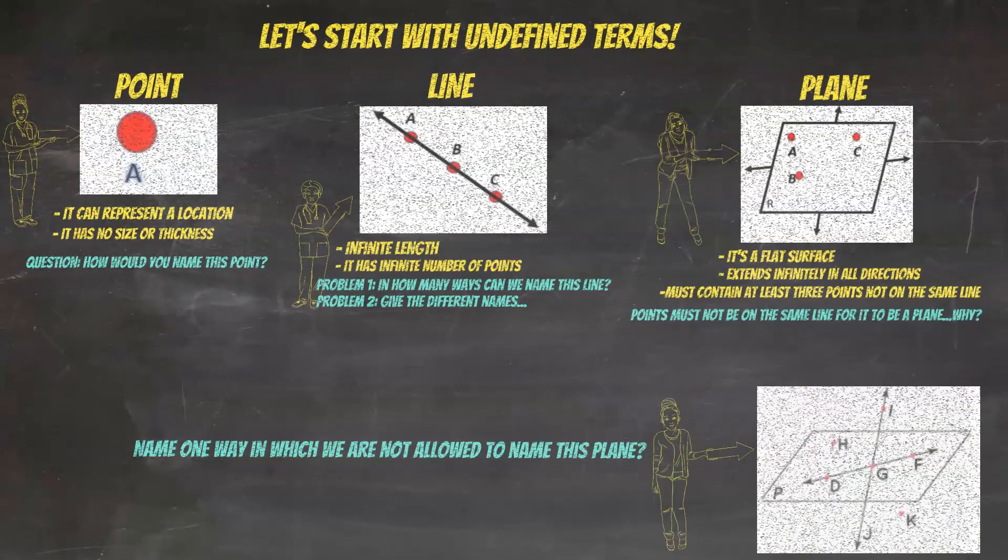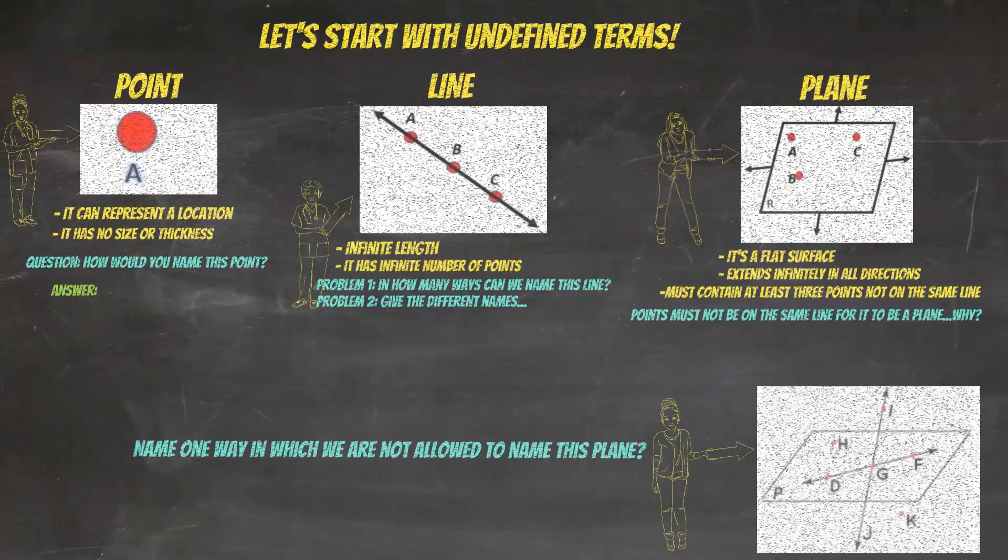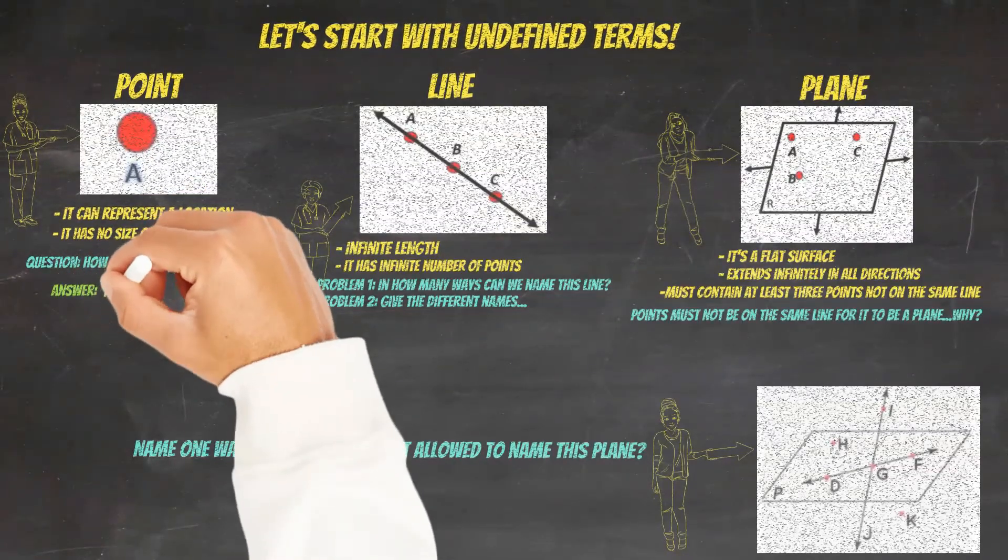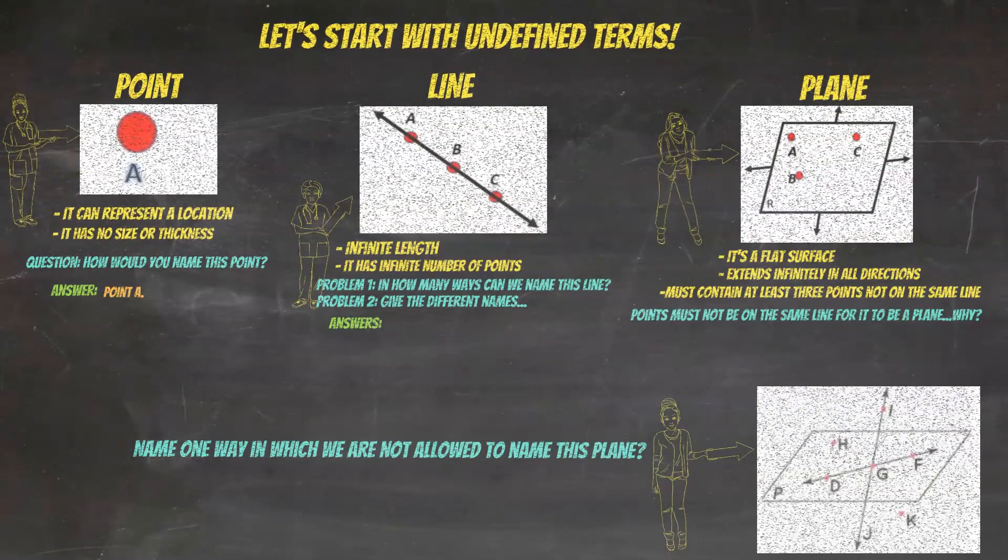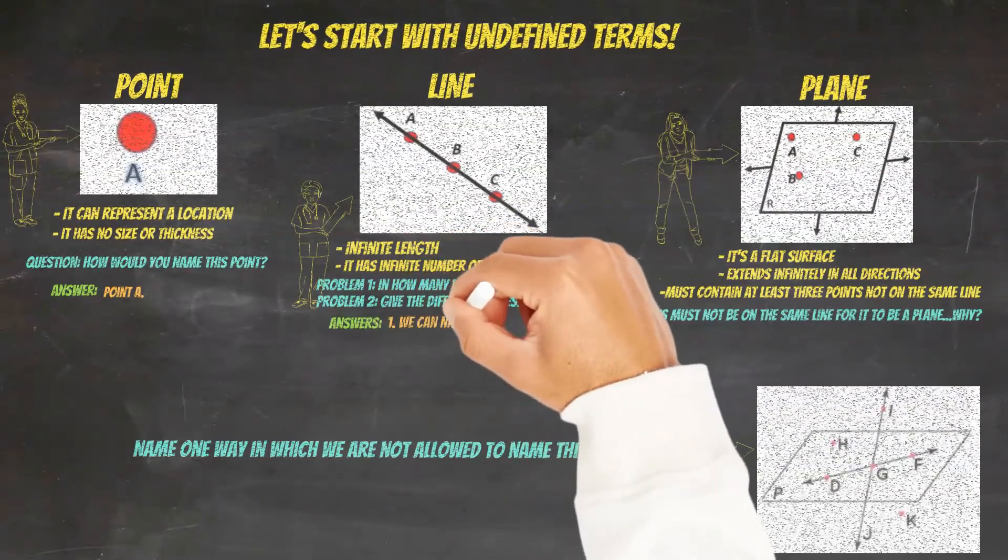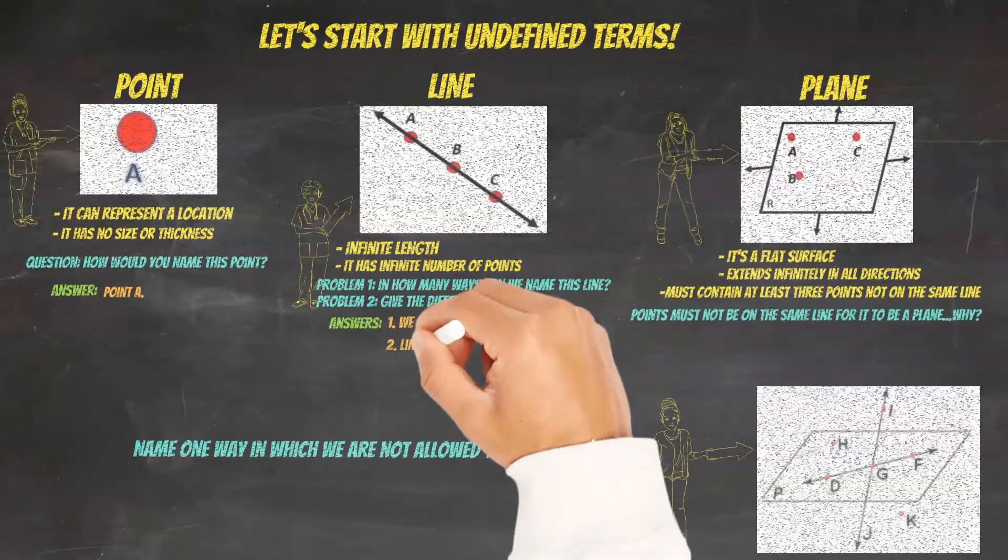So now let's go back and answer each question, starting with point. How would you name this point? You'll name it point A. And on the line, we can name this line in three ways. Those ways are line AB, line AC, and line BC.